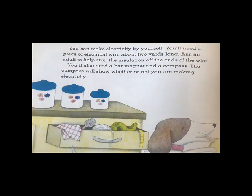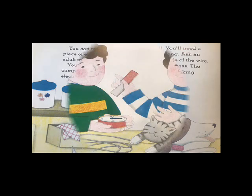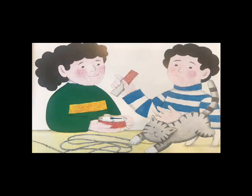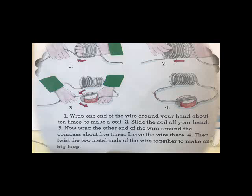You can make electricity by yourself. You'll need a piece of electrical wire about 2 yards long. Ask an adult to help strip the insulation off the ends of the wire. You'll also need a bar magnet and a compass. The compass will show whether or not you are making electricity. Wrap one end of the wire around your hand about 10 times to make a coil. Slide the coil off your hand.